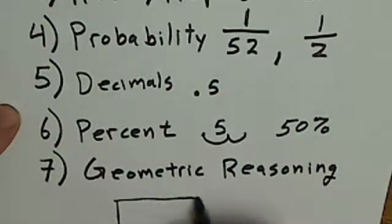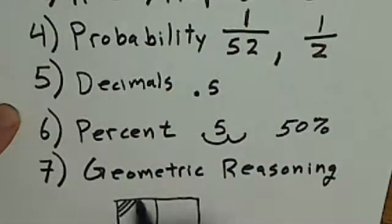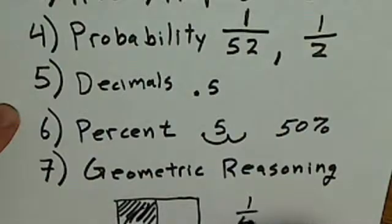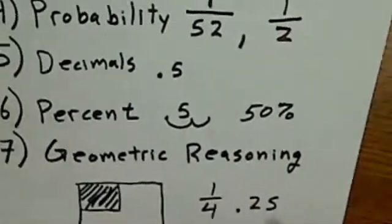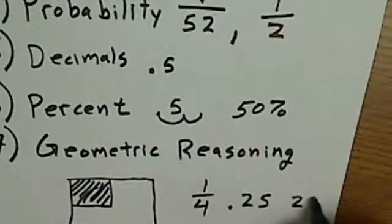So if I have a rectangle like this, and this amount is shaded in, what area is shaded? As a fraction, it would be one out of four. As a decimal, it would be .25. As a percent, it would be 25%.